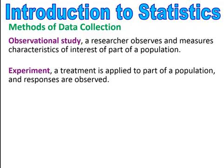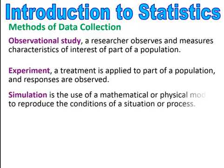In an observational study, all you're doing is observing. In an experiment, you're applying a treatment to part of the population. Simulation is the use of a mathematical or physical model to reproduce the conditions of a situation or process. Simulation is used when it is not humanly possible to do the experiment, so you use a simulation in order to get some statistics.